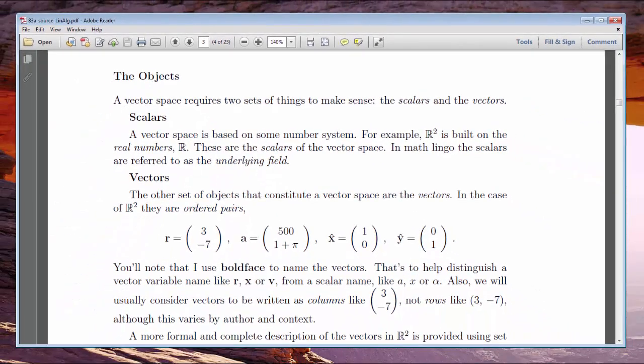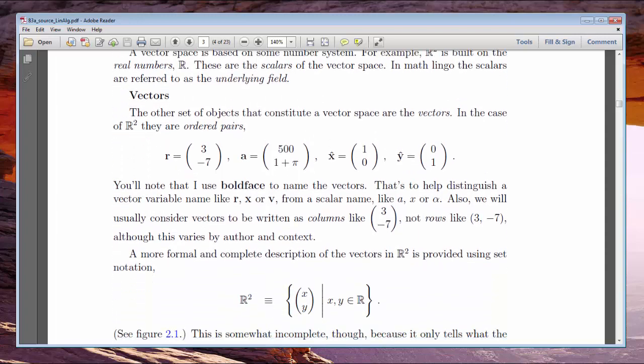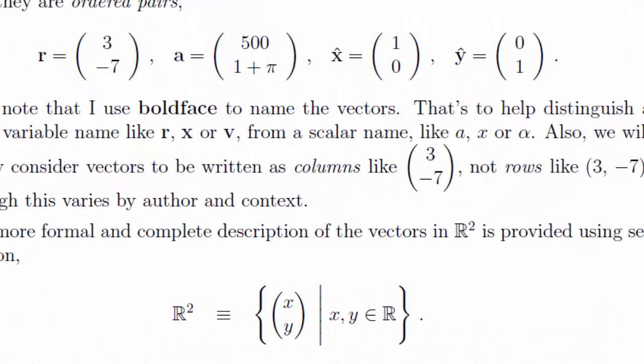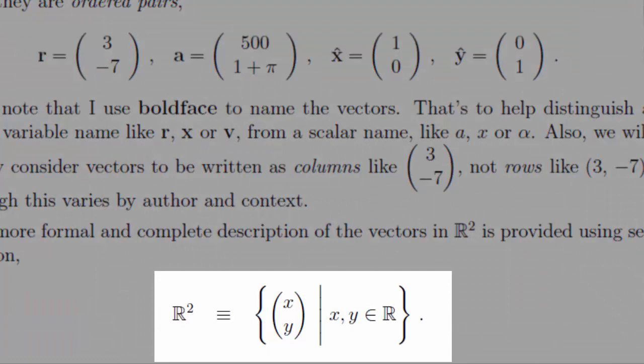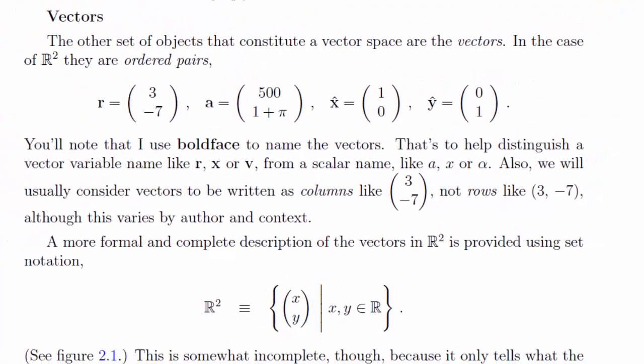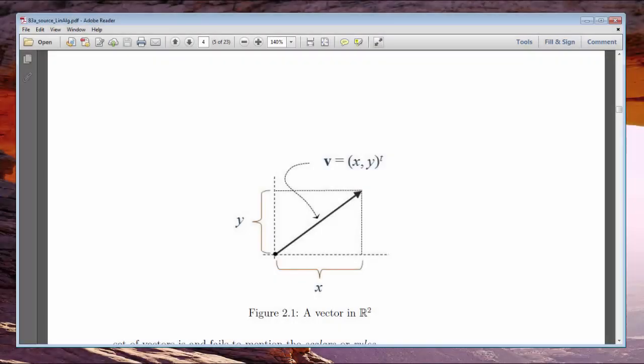We'll learn about vector spaces by examining one of the simplest examples, ordered pairs of real numbers, sometimes called R2, or Euclidean two-space. Each vector in R2 is a column containing two real numbers. Here's a common way to picture a vector in R2. It's an arrow, always anchored at the origin of our x-y-coordinate system, and it has a certain direction and length.